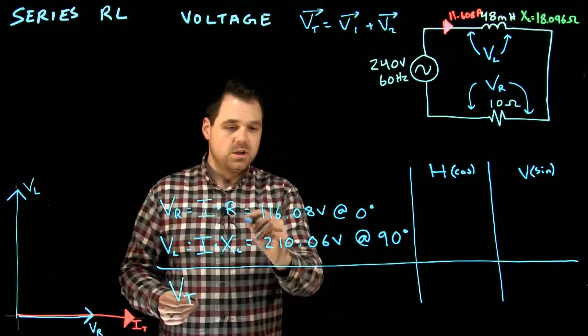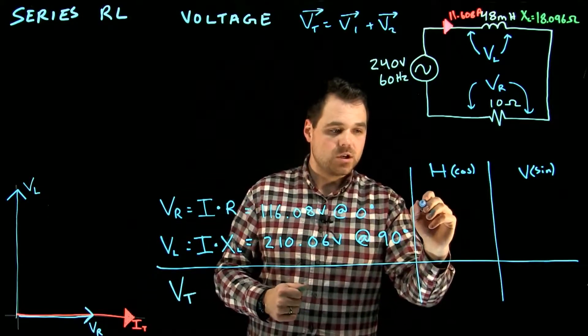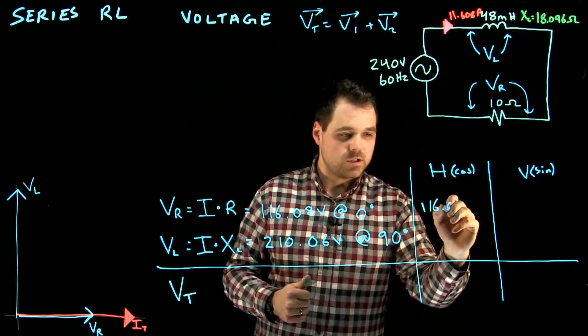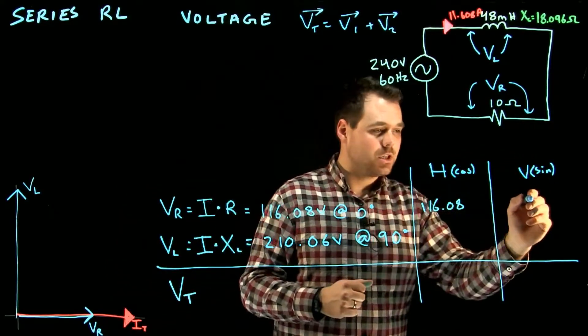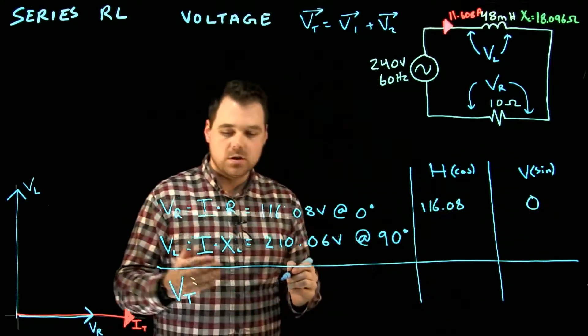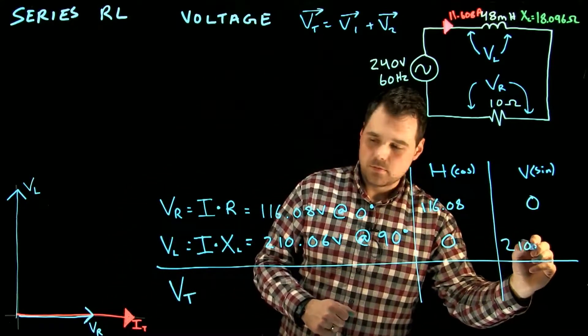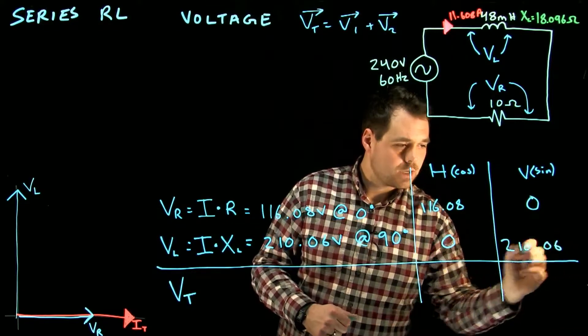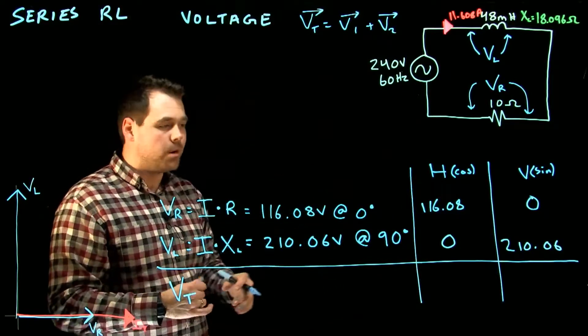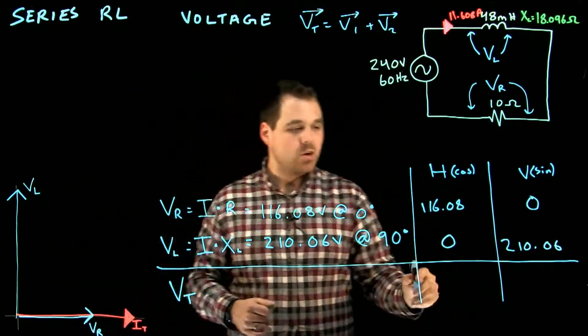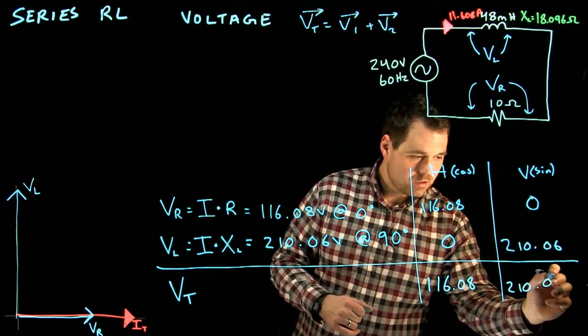So what I'm going to do is I'm going to go 116.08 times cosine of 0 gives me a horizontal of 116.08. 116.08 sine of 0 is going to give me a vertical of 0. Do the same thing for my inductor, I get 0 and 210.06. Once I fill out my HV chart, and we're going to be doing a lot more complicated ones as the lessons go on, now I get to my total. So I'm going to get 116.08 and 210.06.